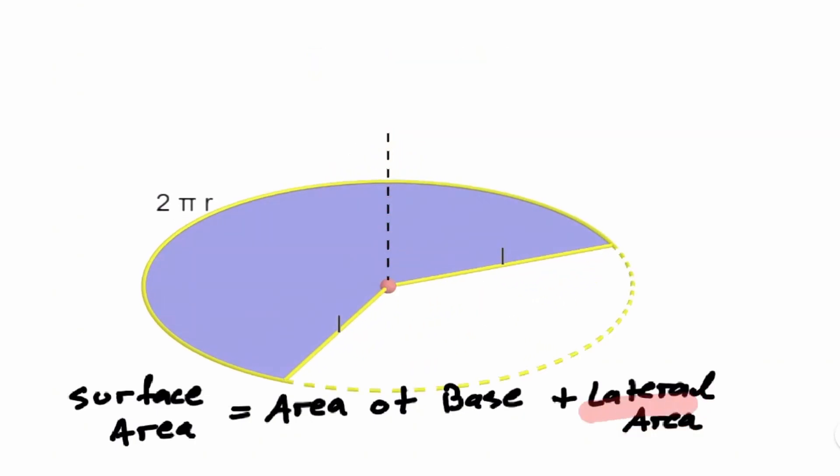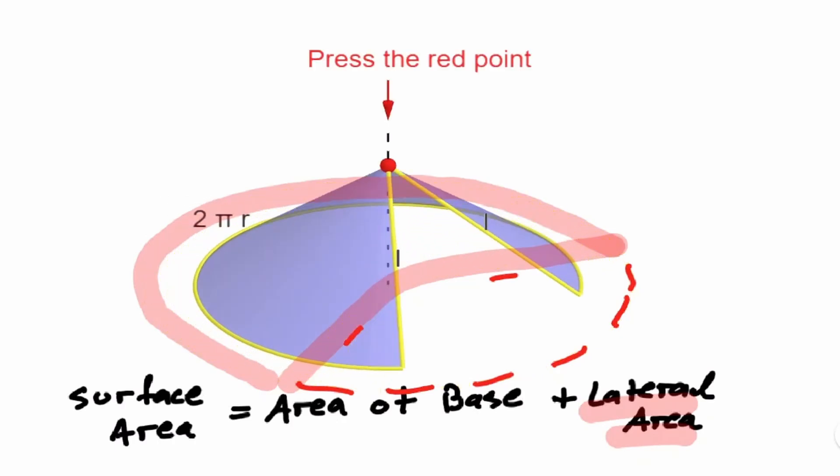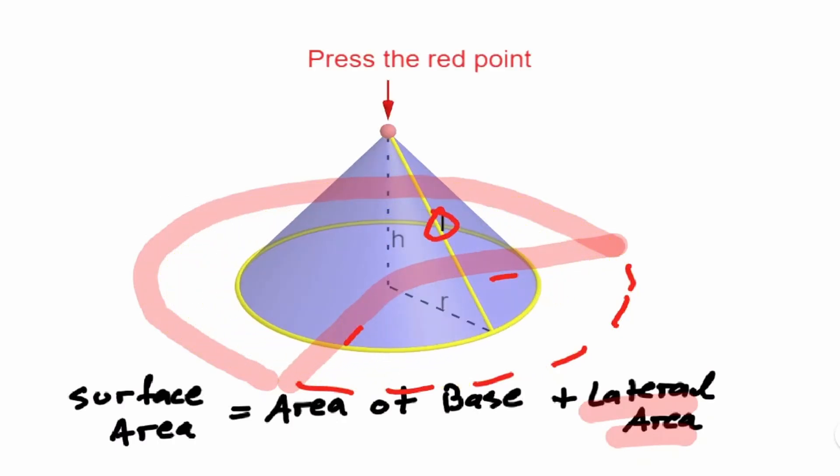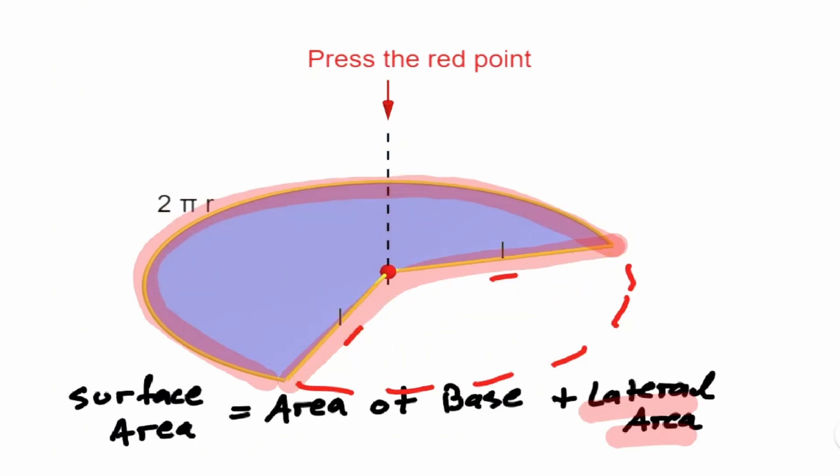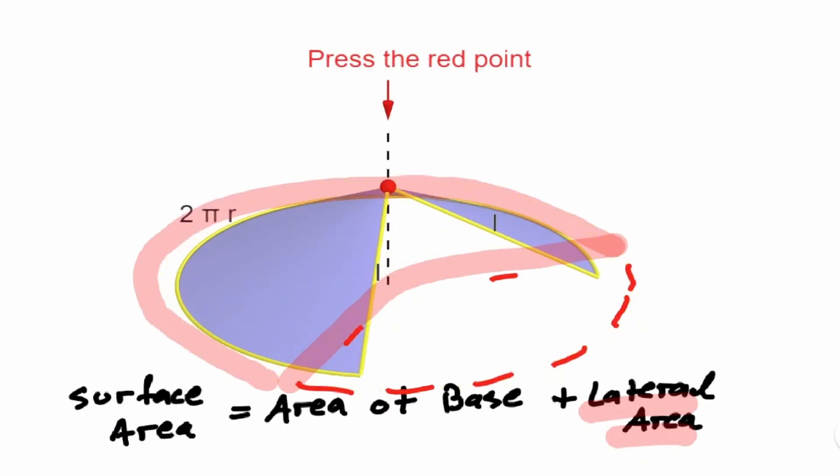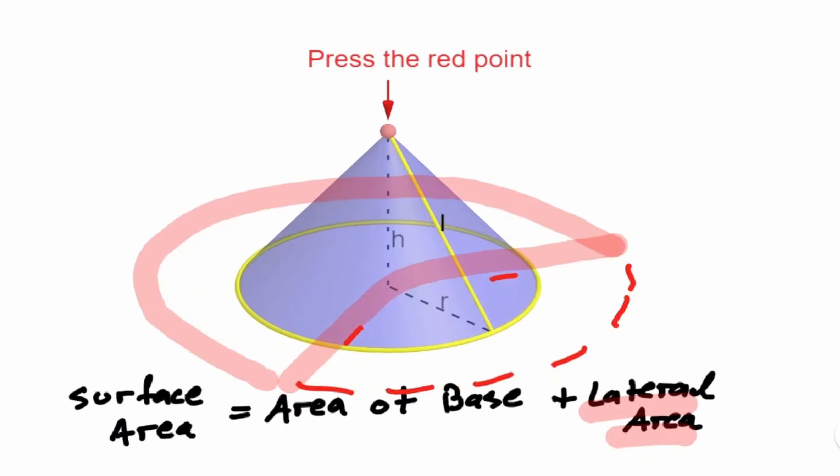Notice that now the lateral area can be seen as a section of a whole circle whose radius is L, where L represents the lateral height of this cone. Here we have our cone. If we flatten it out, notice that the area of this section of this circle will be equivalent to the area that we have for our cone.